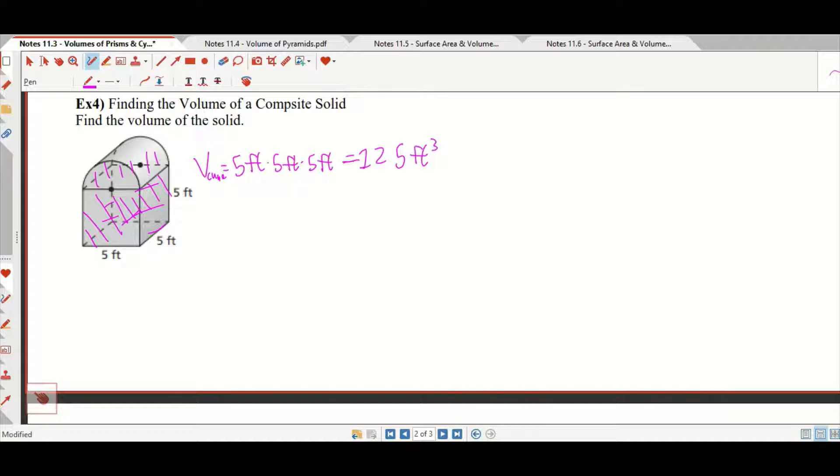Now as for the cylinder, we don't seem to know much about it, but here's the thing: I know that this distance right here is 5 feet because it has to match this down here. I know that this distance is 5 feet because it has to match down here. That is, the radius is 2.5 feet, half of 5 feet, and the height is equal to 5 feet high.